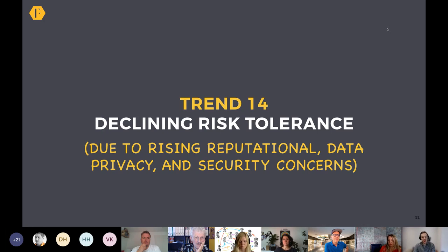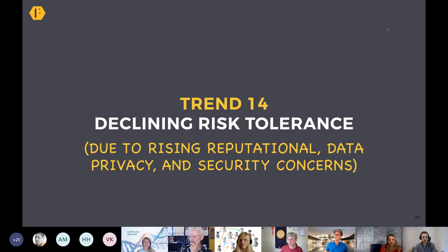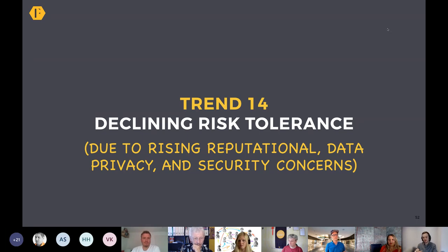Trend number fourteen is declining tolerance for risk. It used to be very common to launch a community and just see what happens. Due to rising data privacy concerns, security concerns, and reputational concerns — what if someone says something bad? — there's a declining risk tolerance. We're going to be expected to get things right the first time instead of being able to test at a small scale and then adapt and expand.